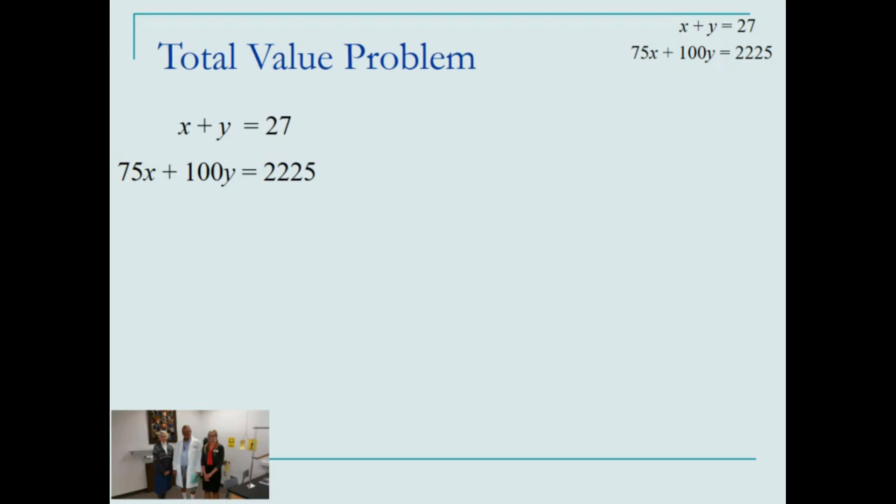We now have our two linear equations, and to solve using combination method, we want to eliminate one of the variables. Let's eliminate the x. Since the second equation has a 75 coefficient on the x term, we need a negative 75x on the first equation so that when they're added together, they're eliminated.